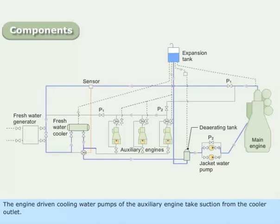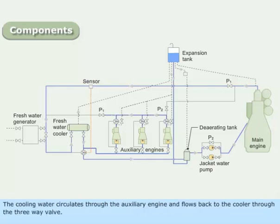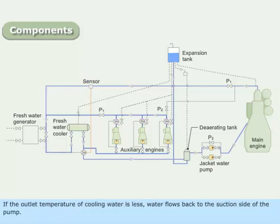The engine-driven cooling water pumps of the auxiliary engine take suction from the cooler outlet. The cooling water circulates through the auxiliary engine and flows back to the cooler through the three-way valve. If the outlet temperature of the cooling water is less, water flows back to the suction side of the pump.